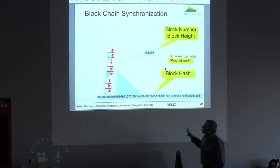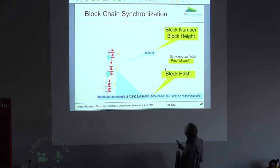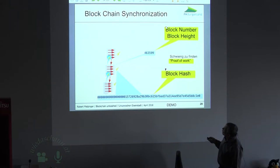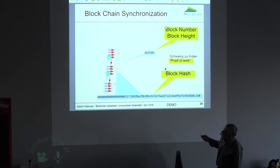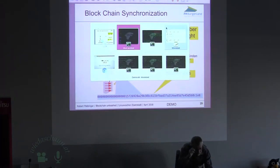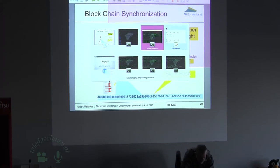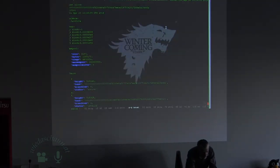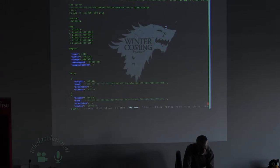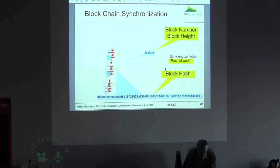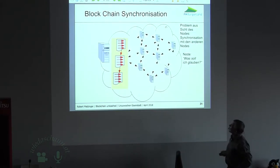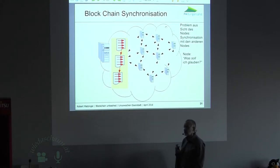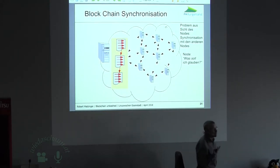Das schaut dann ungefähr so aus — es geht Ihnen jetzt ein Teil von der Grafik verloren, wenn man die dünnen Linien auf dem Projektor nicht sieht. Solche Blocks haben eine Blockhöhe und eben so einen Hash, der dann im nächsten Block wieder mitgespeichert wird. Diese Blocknummer ist exakt die Blocknummer seit der Geburt der Bitcoin-Chain. Wir haben jetzt den Block 519.141 — das sind die Menge an Blöcken, die wir seit der Geburt der Blockchain gesehen haben. Und diese Blockchain speichere ich also jetzt im Peer-zu-Peer-Netzwerk. Wie schafft man das, dass man nur eine Blockchain hat? Das ist eigentlich das entscheidende Problem — die Synchronisation dazwischen.